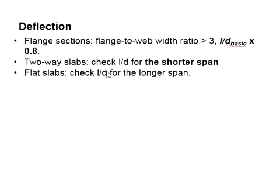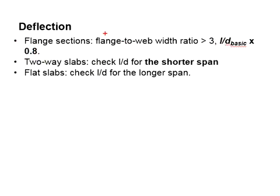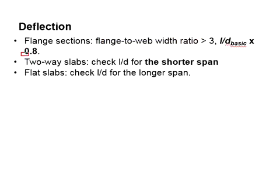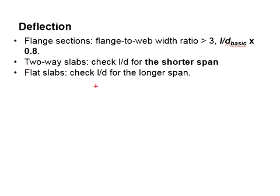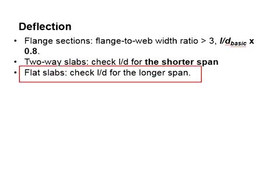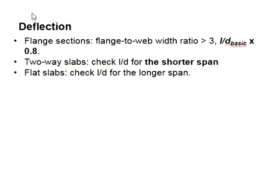For flanked sections, the calculated L/D will have to be multiplied by 0.8 when the flange-to-web width ratio is more than 3. As for the two-way slab, the L/D of the shorter span is checked. While for the flat slab, the L/D for the longer span is to be checked.